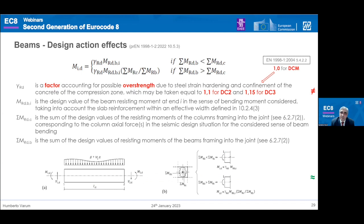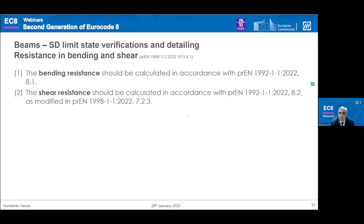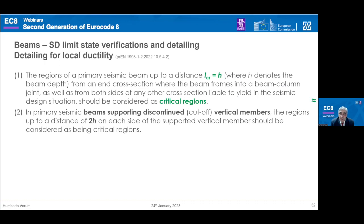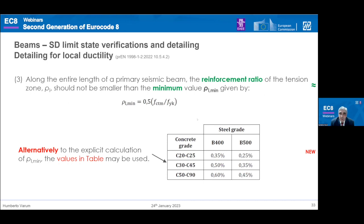Regarding design action effects for beams — in particular shear forces — the rules from the actual version of Eurocode 8 are kept but rewritten with new figures and expressions, while the concept and concerns remain the same. The only change introduced in this second generation is a slight increase in the overstrength factor for DC3 and DC2. Design for bending and shear relies on Eurocode 2 rules. For detailing for local ductility in beams, the critical region length is maintained, and minimum reinforcement expressions are kept but presented in a single table enabling easy identification of minimum reinforcement ratio as a function of steel and concrete grade.